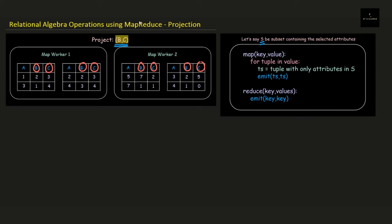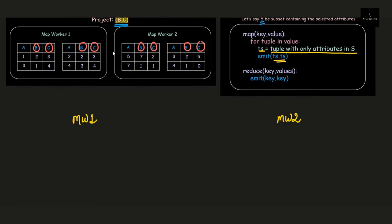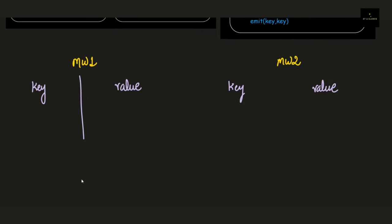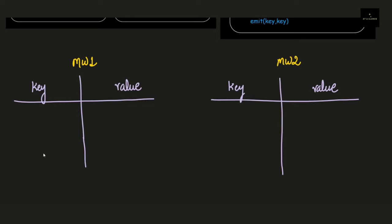Now, following the algorithm, we first iterate over all the values and store them in a temporary variable called tuple. We then specify the variable that stores all tuples satisfying the condition of only selecting those attributes present in variable S. As you know, the Map task converts records into key-value pairs, so we need to convert every record into that form. Each map worker works independently, so let's form the key-value pairs for all records in map worker 1 first, then move to map worker 2.